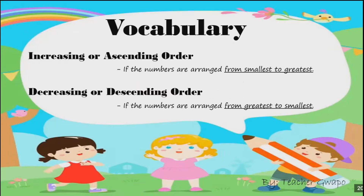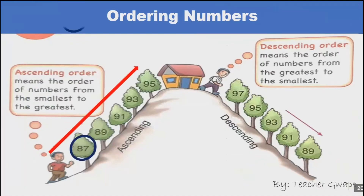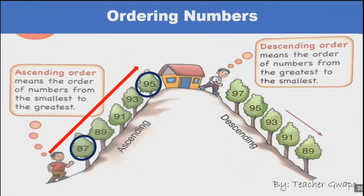Increasing or ascending order means the numbers are arranged from smallest to greatest. As you can see here in the example, ascending order shows 85, 87, and 95. Here, 85 is the smallest number and 95 is the greatest number.